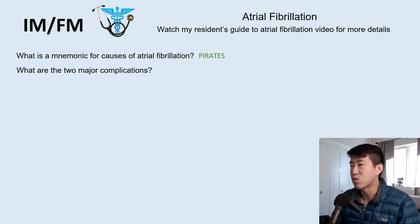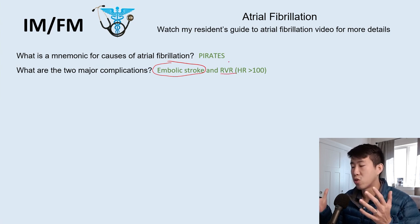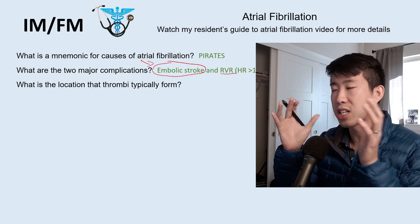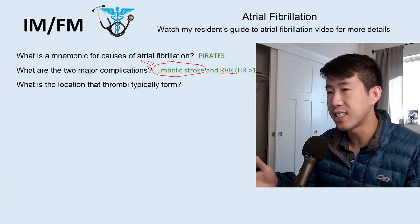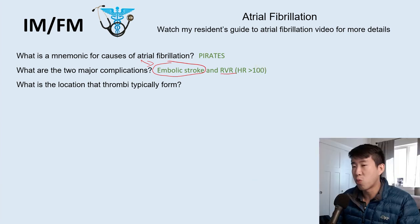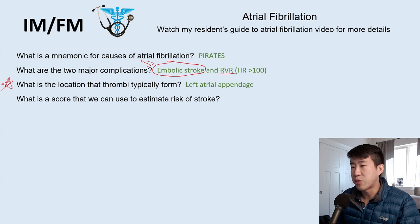The two major complications of atrial fibrillation: AFib is a huge risk factor for stroke, and the other is RVR — rapid ventricular response — where the heart beats very rapidly and can cause hemodynamic compromise. In atrial fibrillation, the atria fibrillate, blood pools and becomes stagnant, forming a clot that can travel to the brain and cause a stroke. A common pimp question is where these clots form — the answer is the left atrial appendage.